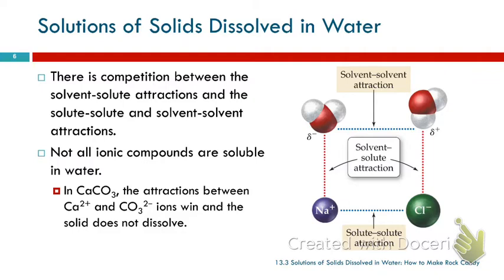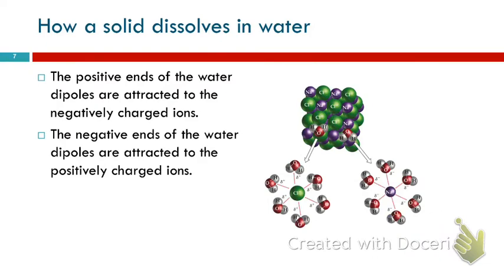"Like dissolves like" predicts that all ionic compounds would dissolve in water, and we know that's not true. Calcium carbonate doesn't dissolve in water because the attraction between the calcium ions and the carbonate ions is too strong. Predicting which ones dissolve is actually quite complicated, so we just use the rules of solubility and won't go into the details because it's just too complicated.